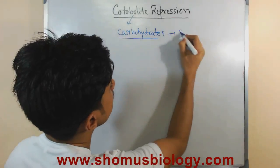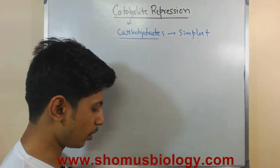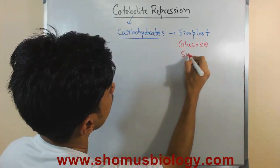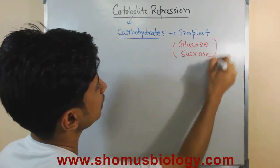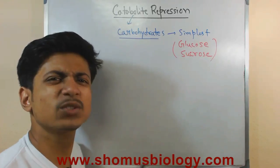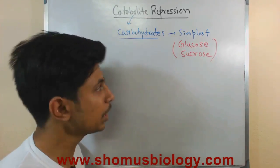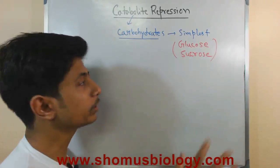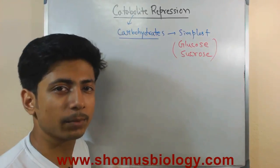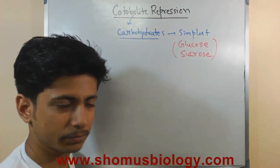The examples of carbohydrates we're talking about are the simplest forms, like glucose and sucrose. Catabolite repression is a system provided by simple carbohydrate molecules like glucose or sucrose to prevent the metabolization of other, more complex carbohydrates until these simpler food sources are depleted.